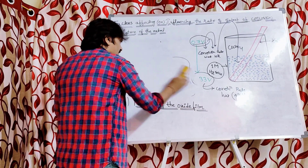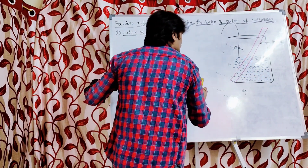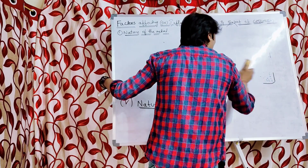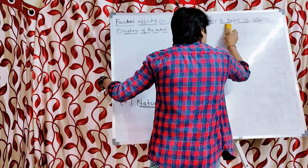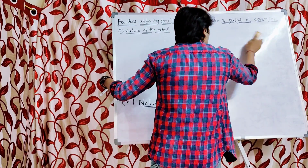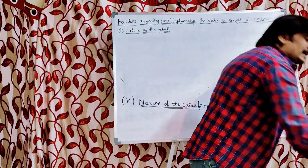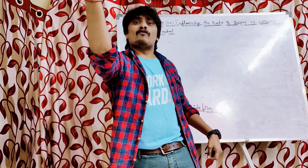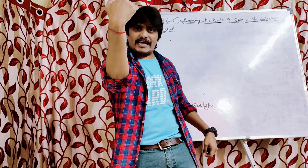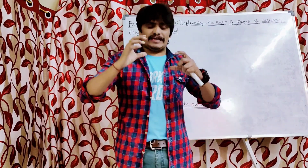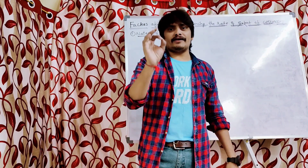Initially, when the zinc rod was immersed in pure sulfuric acid solution, the voltage was 0.7 volts and the corrosion rate was less. When copper sulfate was added to the same 1 molar sulfuric acid solution, the 0.7 volt over-voltage associated with the zinc rod decreased to 0.33 volts, and the corrosion rate increased. More value means less corrosion; less value means more corrosion. Therefore, over-voltage is inversely proportional to rate and extent of corrosion.